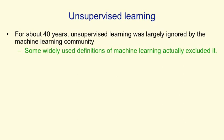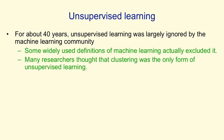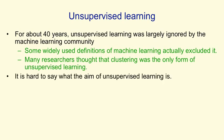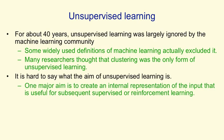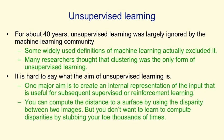In fact, researchers used definitions of machine learning that excluded unsupervised learning, defining it in some textbooks as mapping from inputs to outputs. Many researchers thought that clustering was the only form of unsupervised learning. One reason for this is that it's hard to say what the aim of unsupervised learning is. One major aim is to create an internal representation of the input that is useful for subsequent supervised or reinforcement learning. For example, you don't want to use payoffs from reinforcement learning to set the parameters of your visual system — you can compute distance to a surface using disparity between two eyes, but you don't want to learn that by repeatedly stubbing your toe. There are much better ways to learn to fuse two images based purely on the information in the inputs.